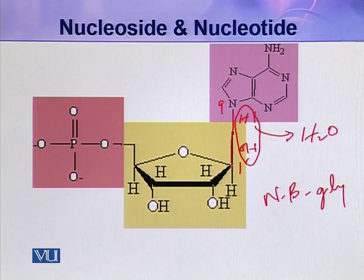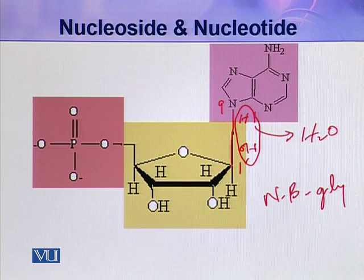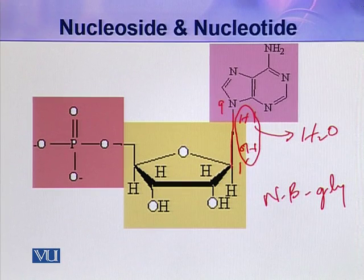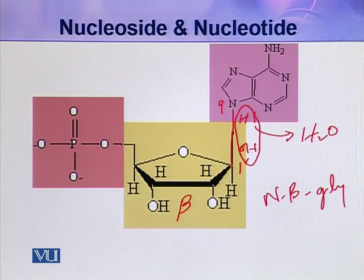Why is it called N-beta glycoside linkage? Because this is a covalent bond in which the nitrogen of the nitrogenous base is included, and this pentose is in its beta configuration. That is why the name N-beta glycoside is given to this covalent bond.